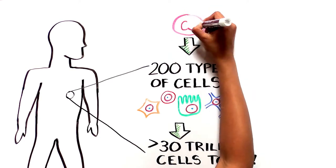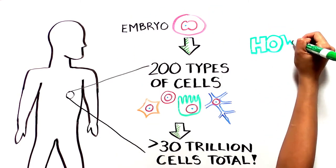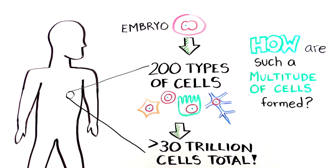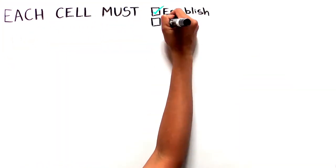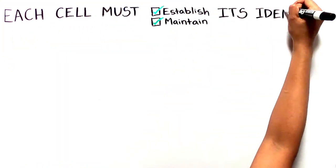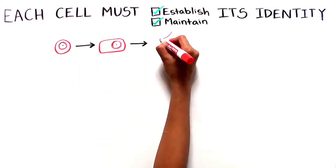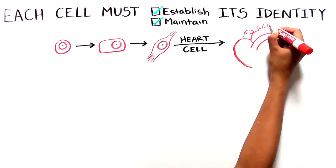So how are such spectacular multitudes of cells formed in the human body? In order for such a wide variety of cells to form, each cell has to establish and maintain its identity. A heart cell needs to decide that it's going to be a heart cell and then commit.